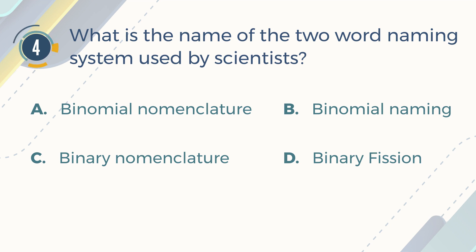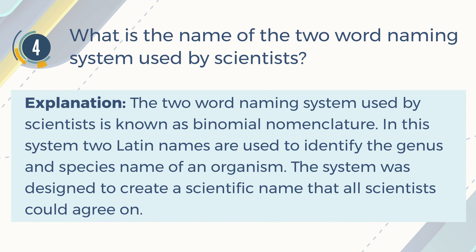The correct answer is A. Binomial nomenclature. Explanation: The two-word naming system used by scientists is known as binomial nomenclature. In this system, two Latin names are used to identify the genus and species name of an organism. The system was designed to create a scientific name that all scientists could agree on.